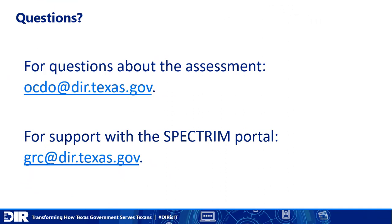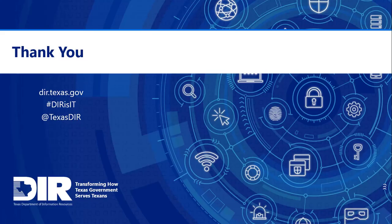To recap, we have looked at the four stages of the data maturity assessment process: access, input, submission, and output. If you do have any questions, please don't hesitate to contact us at the Office of the Chief Data Officer. Our email address is ocdo at dir.texas.gov. For any issues with the Spectrum Portal, please email grc at dir.texas.gov. We hope this video has been helpful, and thank you for your time.